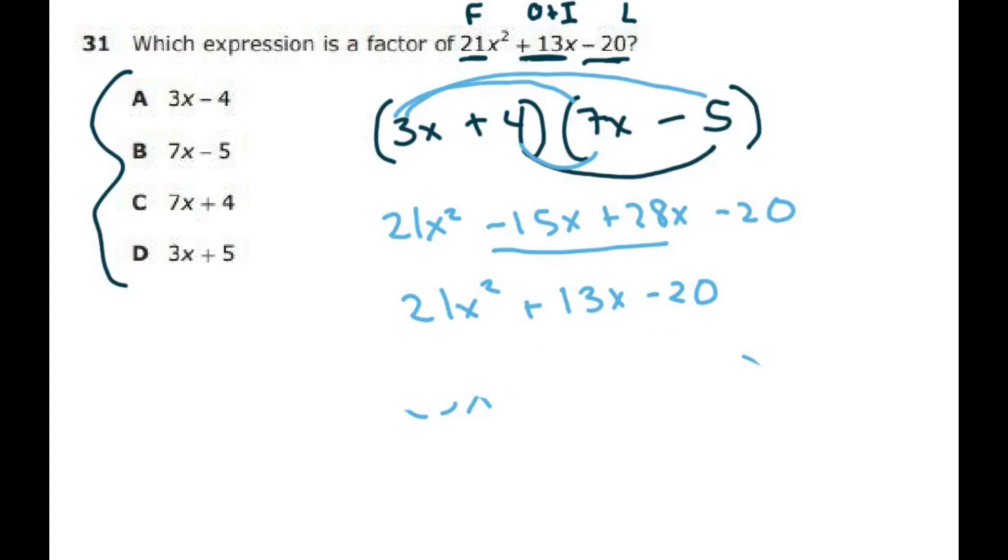So that's how I would do that. So here are our two factors, 3x plus 4, which is not there, and our other one is 7x minus 5, which is one of our solutions.